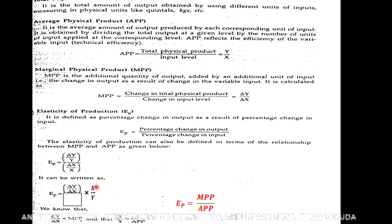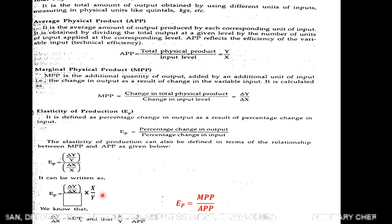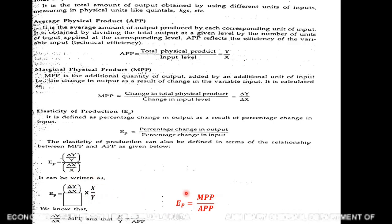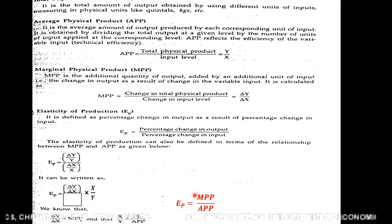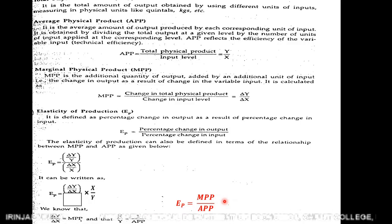The second term is X by Y. We know that Y by X is average physical product, so X by Y is equal to 1 by APP. Therefore, EP equals MPP into 1 by APP, which means elasticity of production is equal to MPP divided by APP. These are the important concepts in production function.